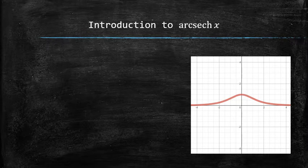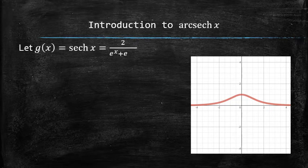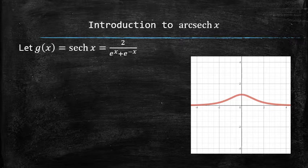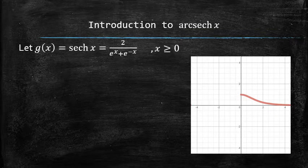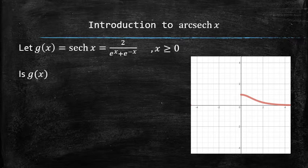Now, let's make a new function g(x) from the hyperbolic secant x by restricting the domain of the function to only non-negative x values. Is this function one-to-one? The answer is yes, because now it passes the horizontal line test.